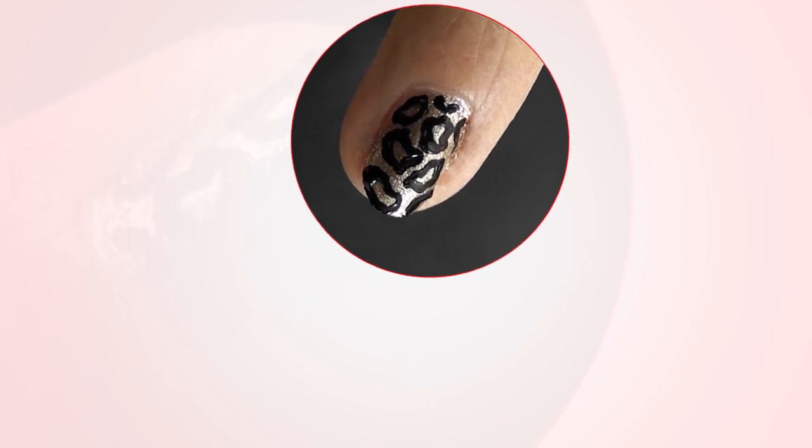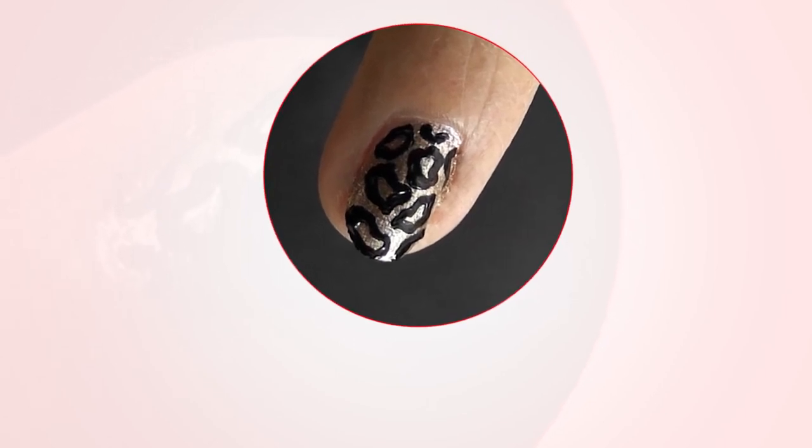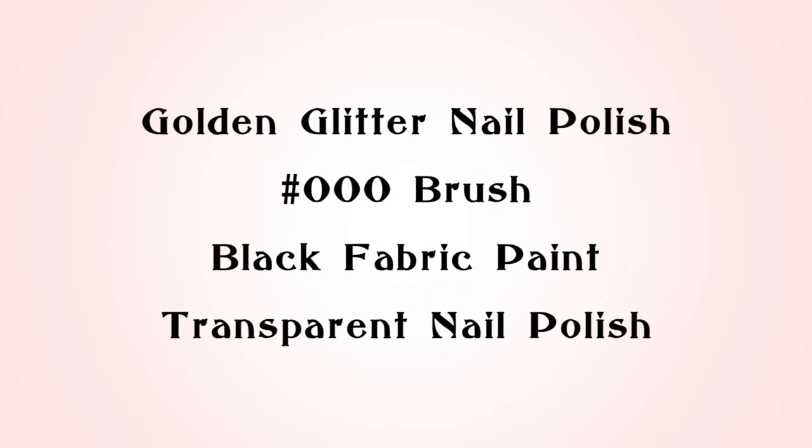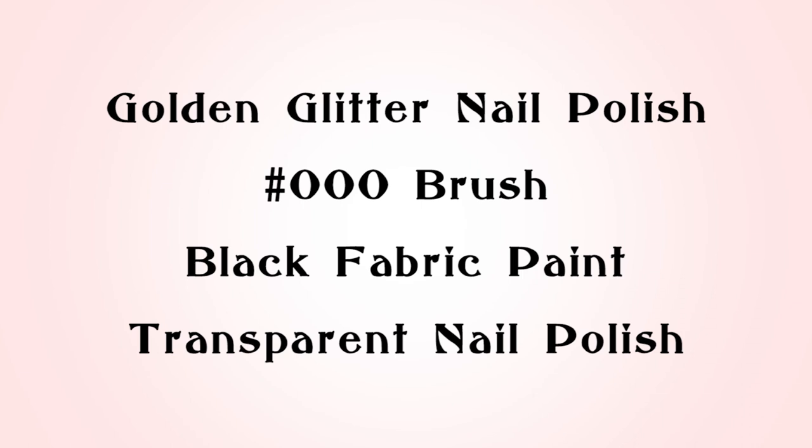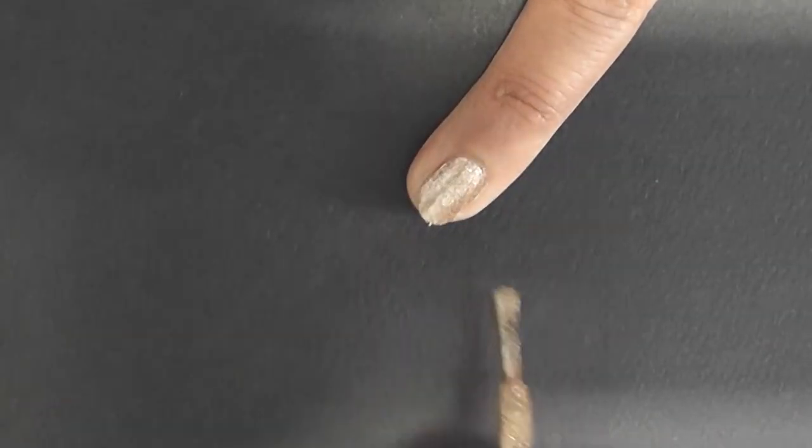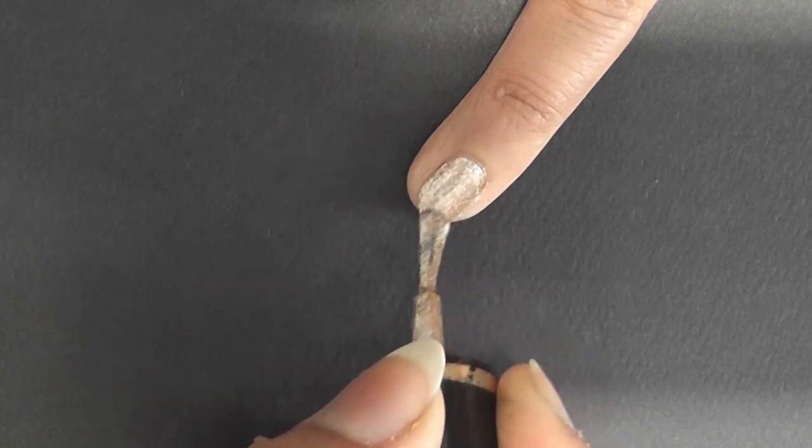Here we have some super easy ways to do nail art leopard print. You'll need golden glitter nail polish, a #000 brush, black fabric paint, and transparent nail polish. First, apply a coat of the gold glitter nail polish and leave it to dry.